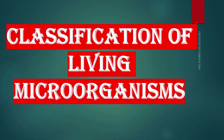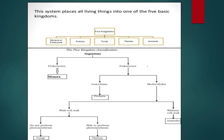Let's move to the first slide: classification of living microorganisms. Before discussing the classification, we need to know how all living organisms in our world are classified. All living organisms are classified into five kingdoms. The scientist Whittaker first differentiated all living organisms into five different kingdoms: Monera, Protista, Fungi, Plantae, and Animalia, based on their characteristics.